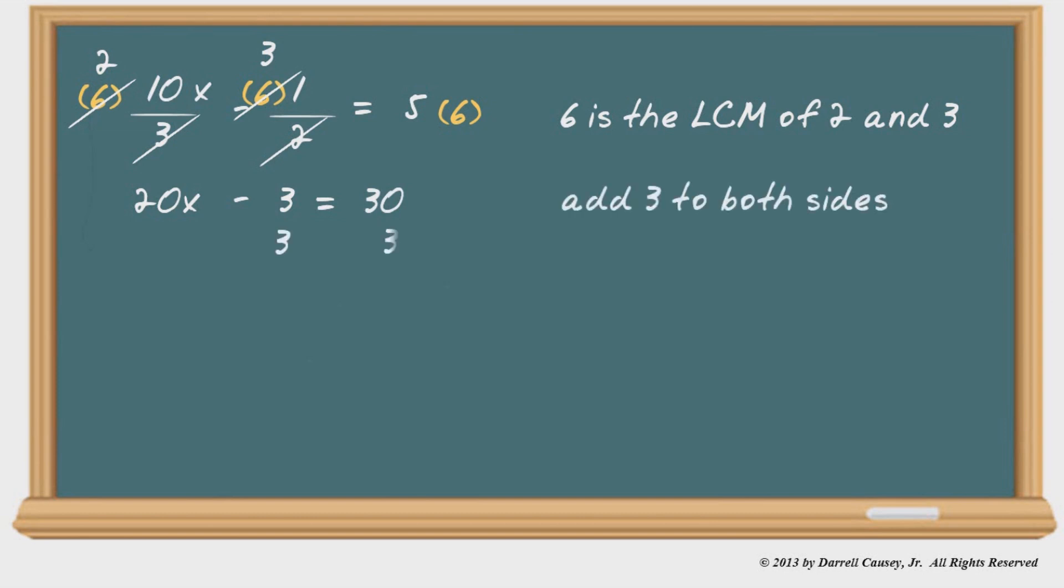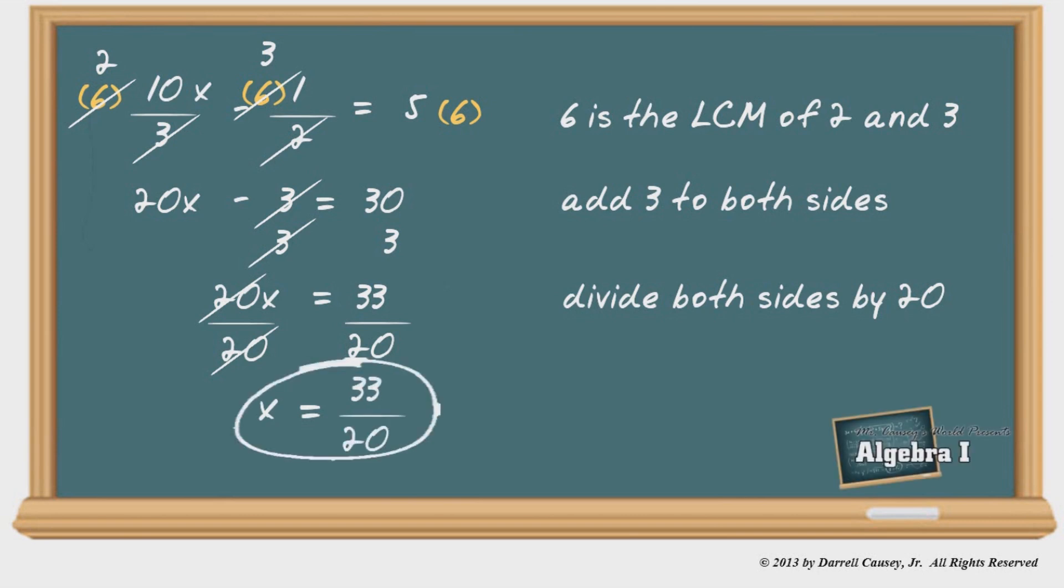Now add three to both sides. Now we have 20x equals 33. Divide both sides by 20. And our answer is x equals 33 over 20. And you want to make sure that that is reduced. But don't worry about making it a mixed number. Mixed numbers are not useful in algebra. So we'll leave it as an improper fraction.